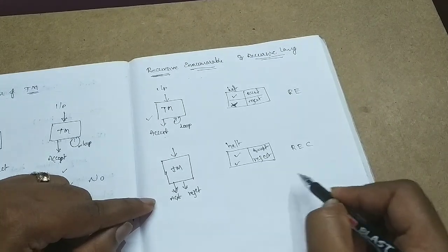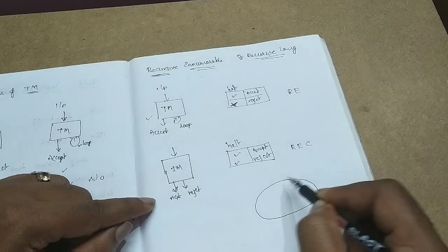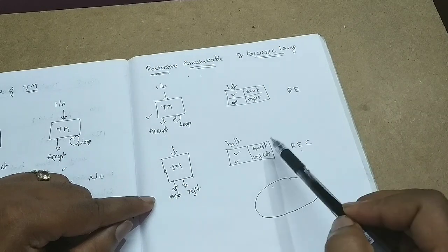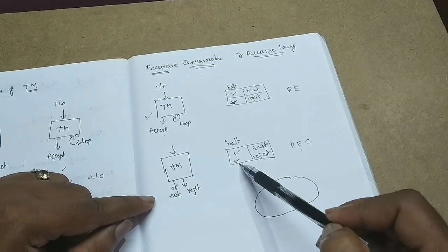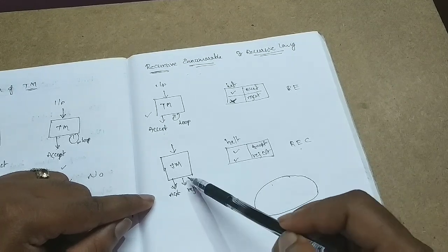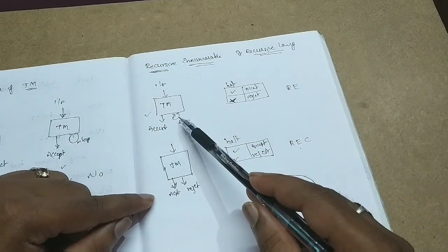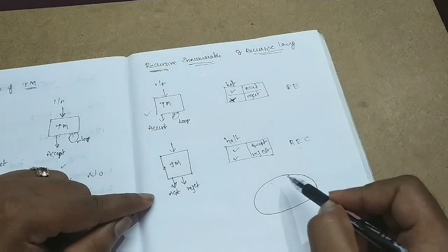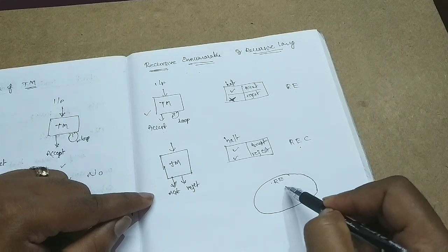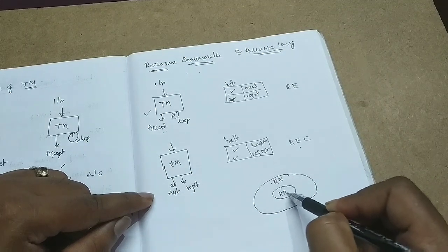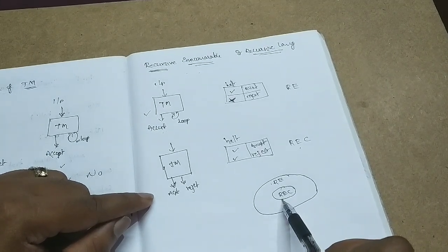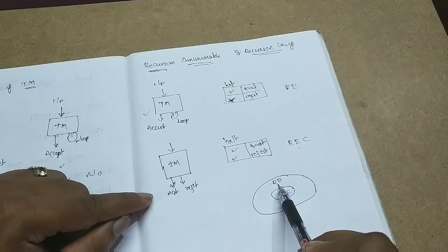Recursive languages are a superset? No — every recursive language is recursive enumerable by default. Why? Because if you can clearly reject, you can convert that rejection into an infinity loop. So recursive languages are a subset of recursive enumerable languages. Every recursive language is recursive enumerable, but not vice versa.